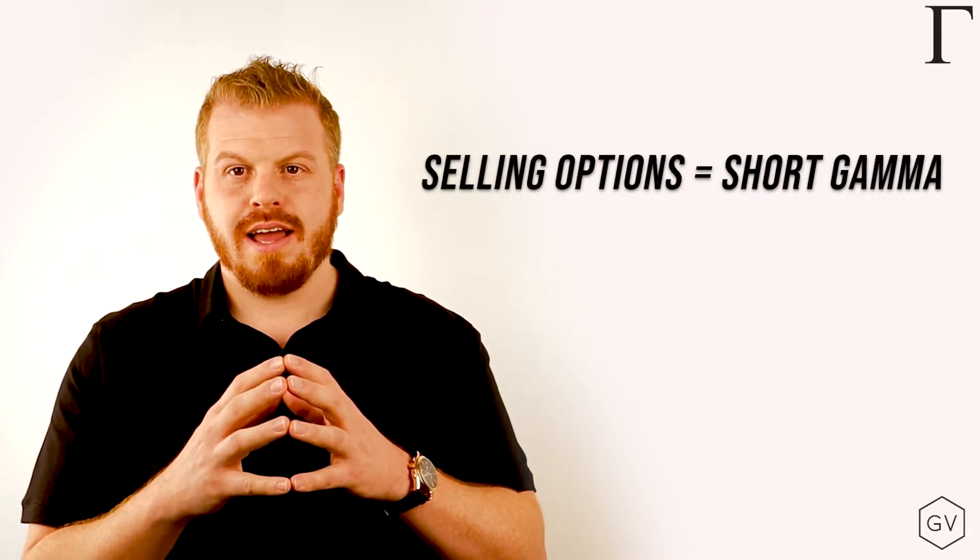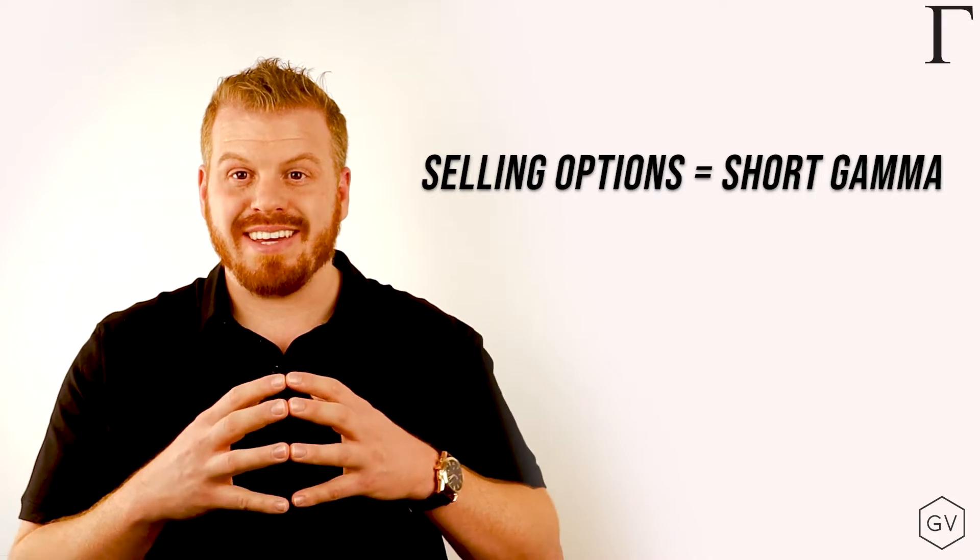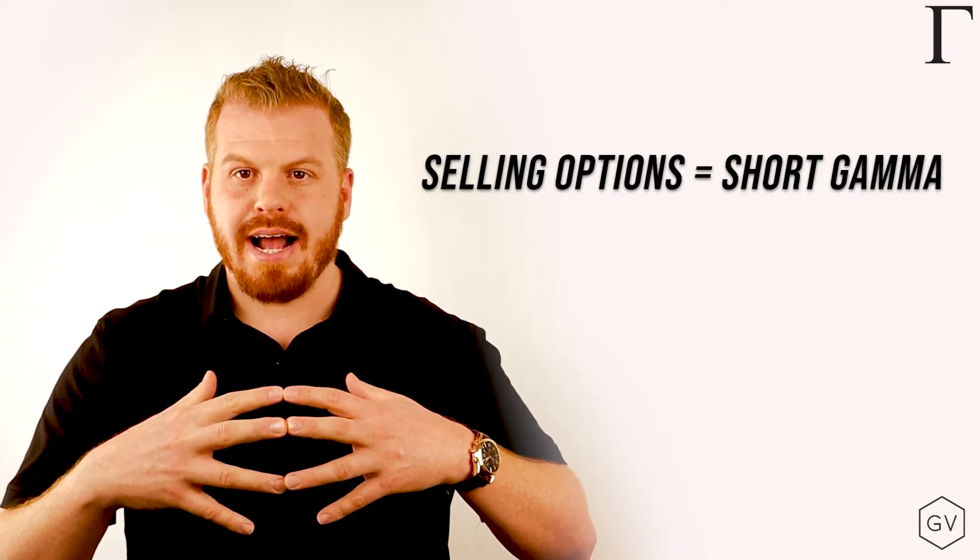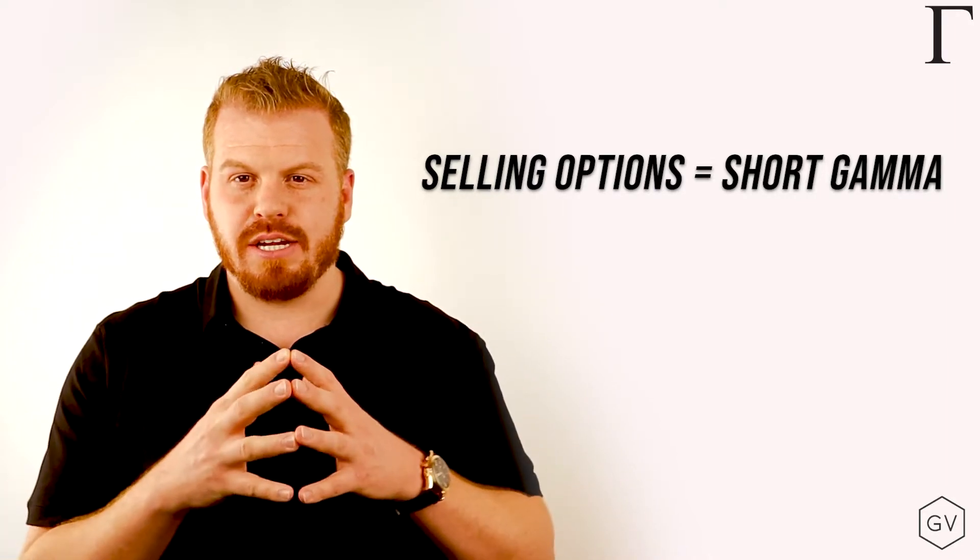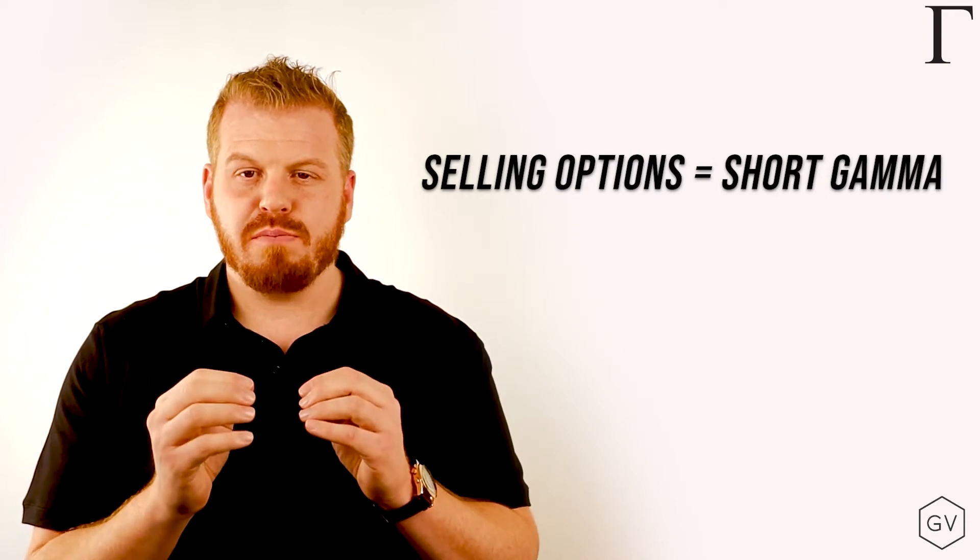Selling options has the inverse gamma profile. As the position goes against you, you have increasing exposure. As the position goes in your favor, you have decreasing exposure. Now you might ask, why would anyone want to sell options with such a negative gamma profile? This leads us to our third Greek.